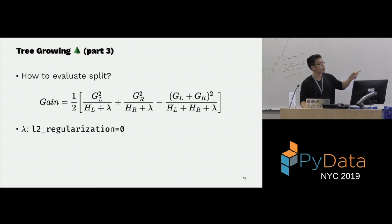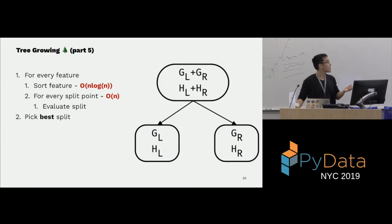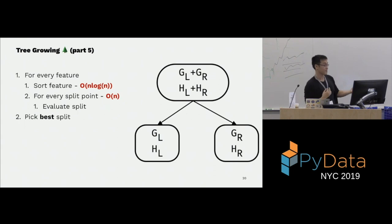I left out the regularization — in Scikit-Learn it's set to zero by default, but you can set it. Now we know how to evaluate a split using that gain formula. But sorting the feature is O(n log n), and if the data has continuous values, there are n possible split points. So this is pretty slow — which is where we come to the histogram part of gradient boosting.